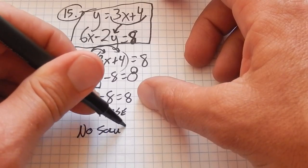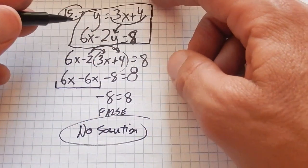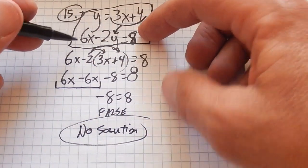So remember, if we're solving a system and we end up with a false statement, that means that our premise, the original thing we started with, had to be false. As long as we didn't make a mistake in here. So if we end up with something that's false, that means there's no solution to this. These lines never cross.